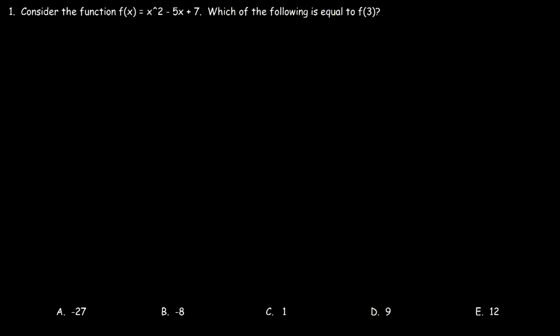This video is a multiple choice review of functions and graphs. Let's start with the first problem. Consider the function f(x) = x² − 5x + 7. Which of the following is equal to f(3)?